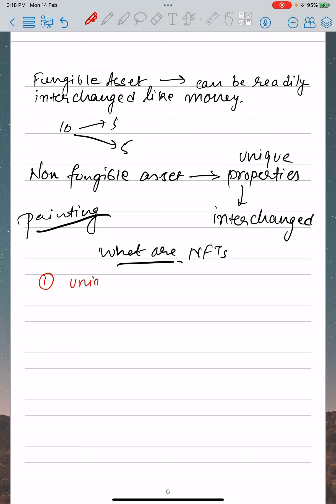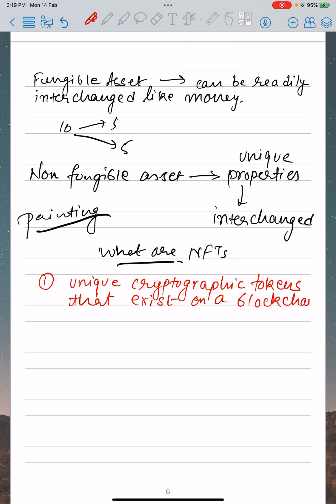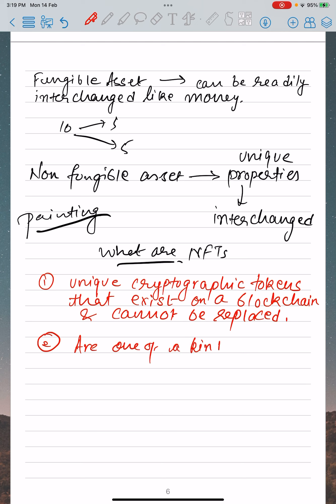What are NFTs? First point: they are unique cryptographic tokens that exist on a blockchain and cannot be replaced or replicated. Second, they are one-of-a-kind assets in the digital world that can be bought and sold like any other piece of property.